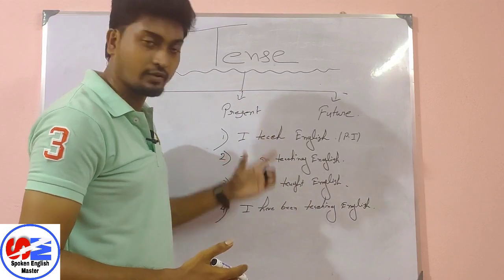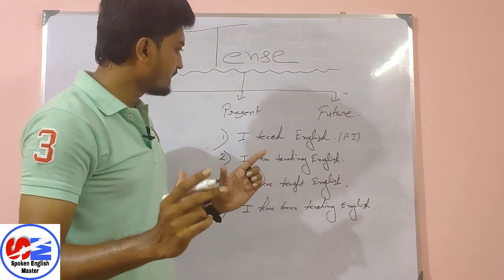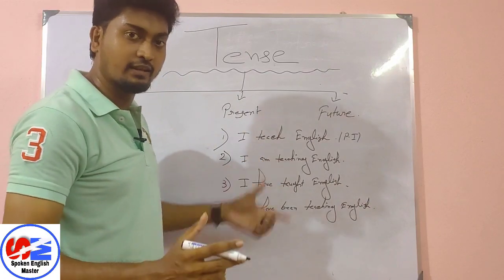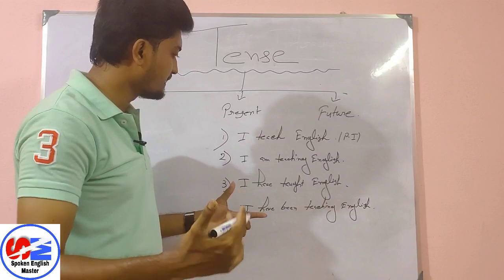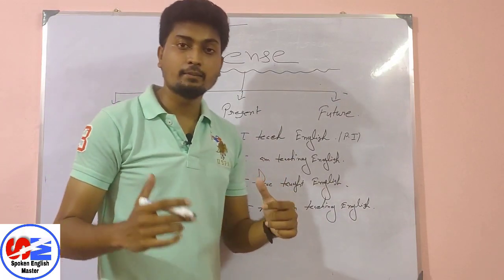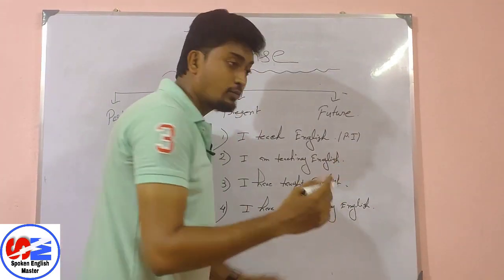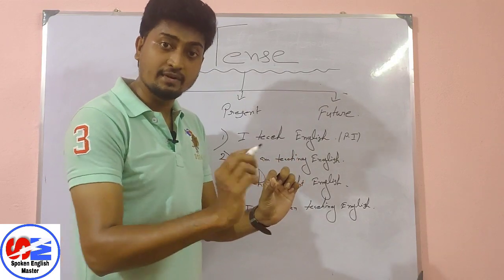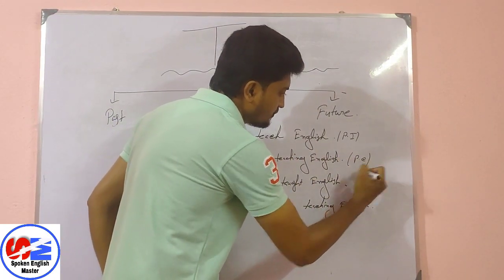Example two: 'I am teaching English' — in Hindi, 'Main English para raha hun.' 'Para raha hun' means the action is happening right now, continuously. So this is present continuous tense.